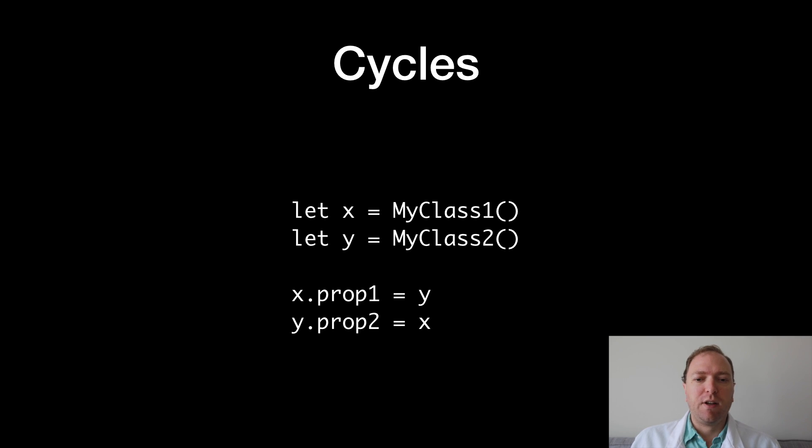ARC handles a lot of common scenarios really well. There's one common scenario it can't handle, though, and that's cycles. You get a cycle any time an object refers back to itself by referring to another object, possibly through a chain of objects.